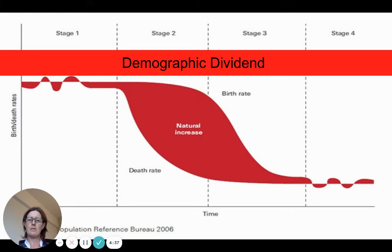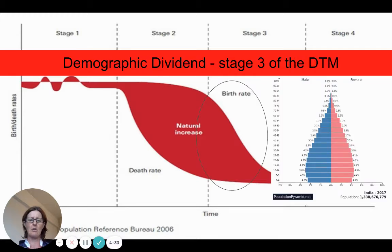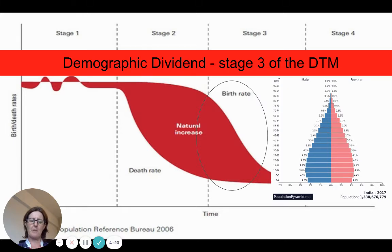There is a challenge for many countries to achieve this, so we'll also discuss the challenges. Ultimately, we're really talking about how we can move our population structure from one that has a lot of youthful dependence into one where we have a high proportion of people in the economically active age group.